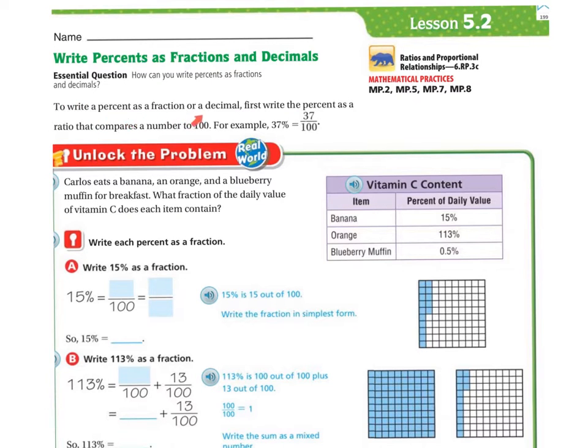To write a percent as a fraction or a decimal, first you must write the percent as a ratio that compares a number to 100. For example, 37% is the same thing as 37 over 100.